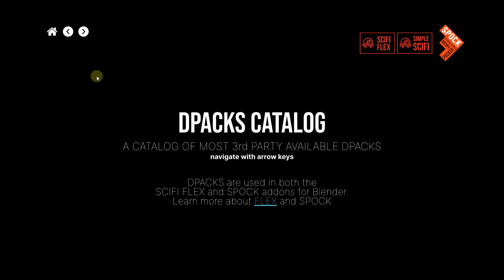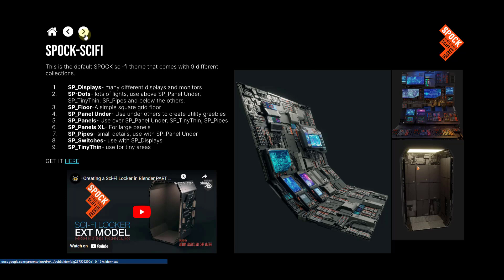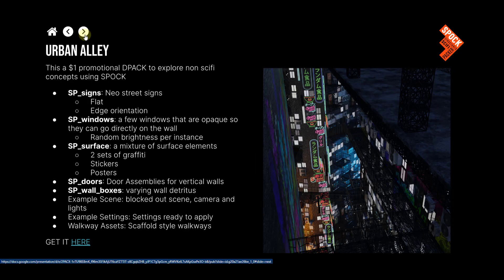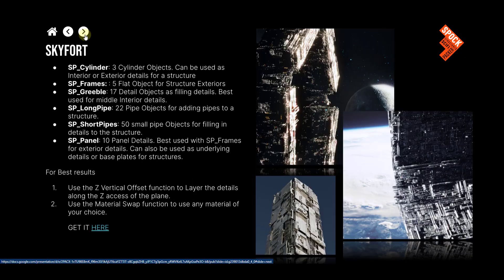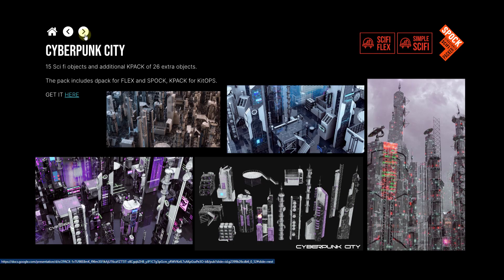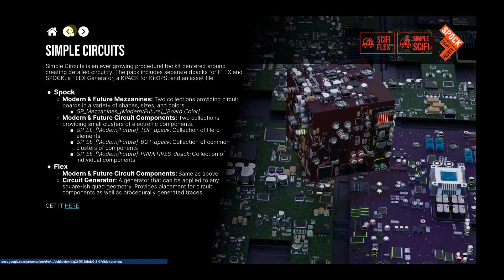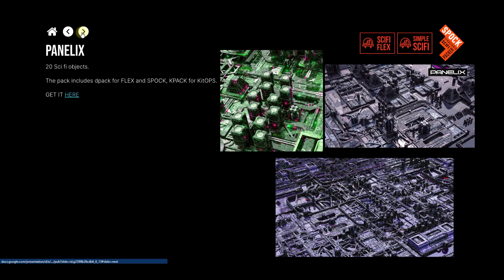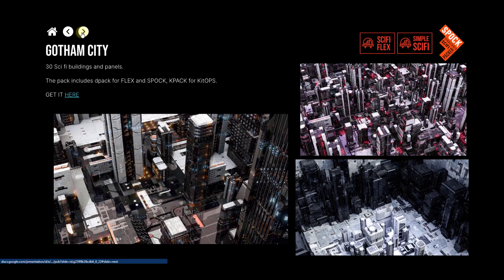He's also got a catalog, which I'll link to, that basically runs you through some of the available DPACs for this. A DPAC is basically a collection of objects that this is going to use to scatter. Depending on what you're trying to do, there's a bunch of different DPACs out there that let you do different things. This one, for example, uses DPACs to create a city, while this one creates more like circuits and transistors and little electrical tools. You can go through this page and see what some of those packs are available.